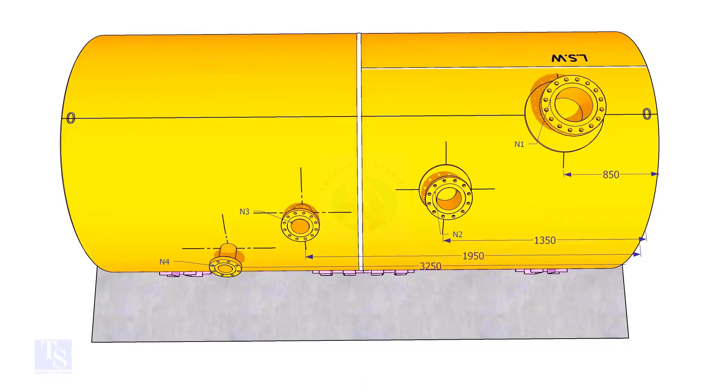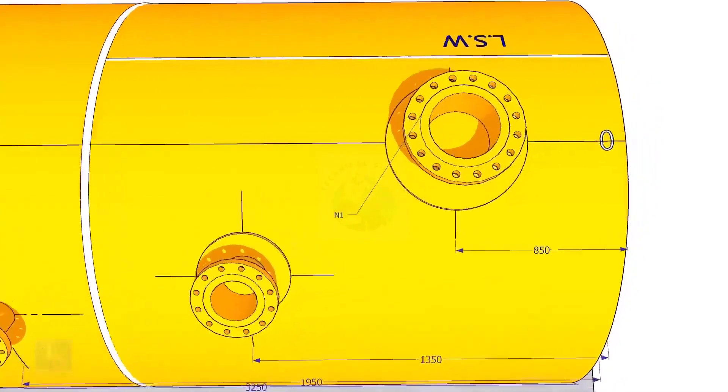Extend the nozzle N1 center line up to the other end of the shell and mark it as zero degree.